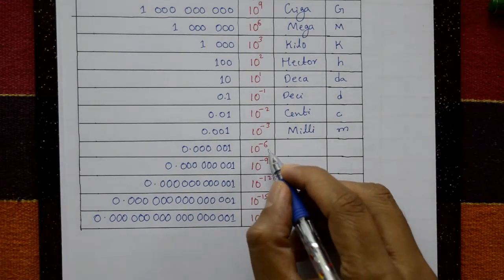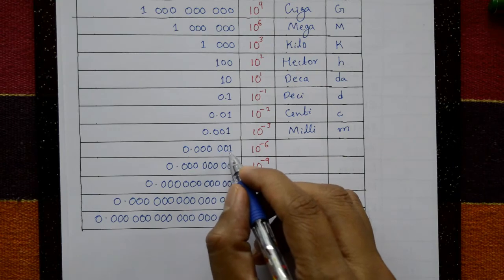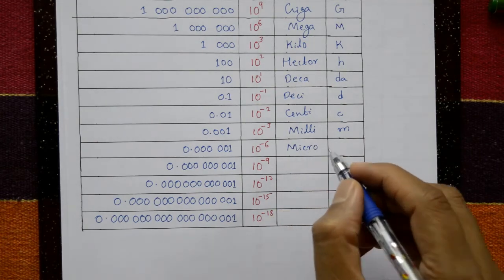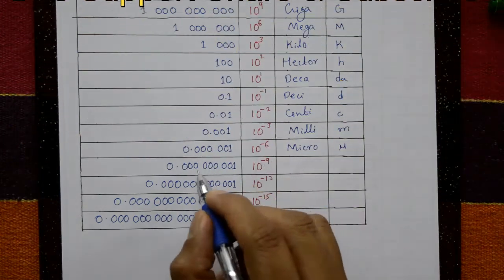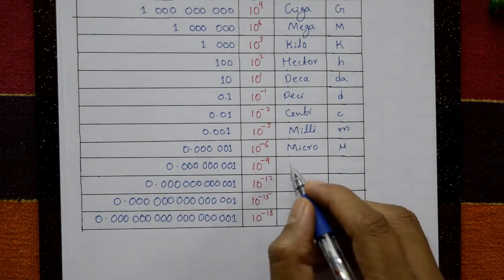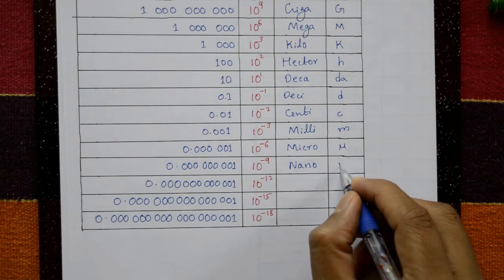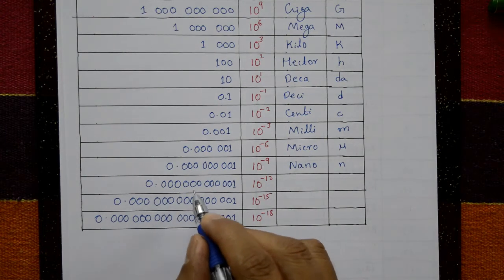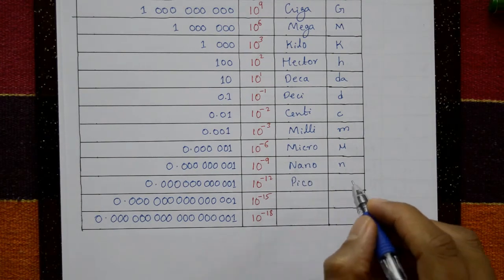10 to the minus 6 — 0.000001 — is micro. The micro symbol is mu (μ). 10 to the minus 9 — 0.000000001 — is nano. The symbol is n. 10 to the minus 12 is pico and the symbol is p.